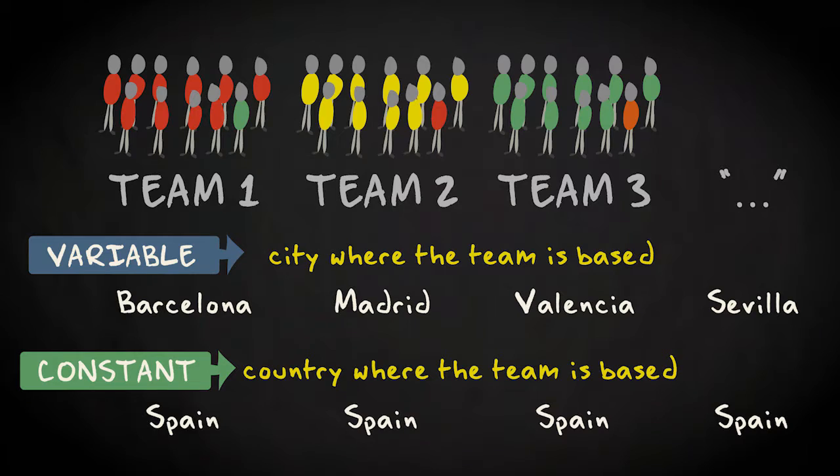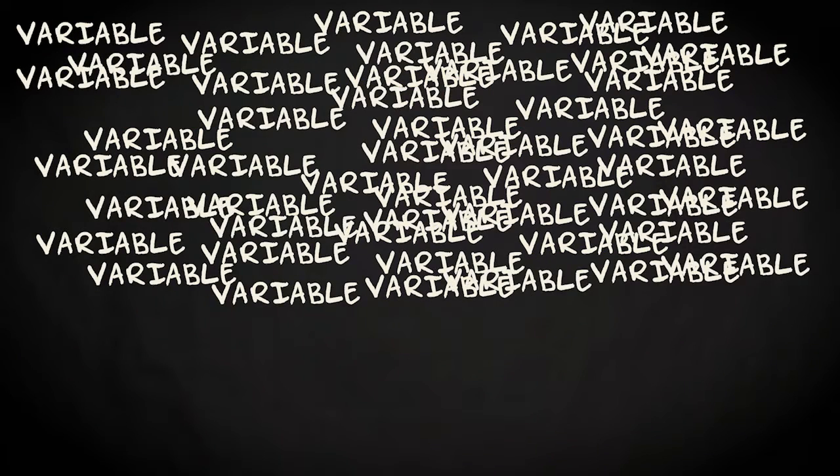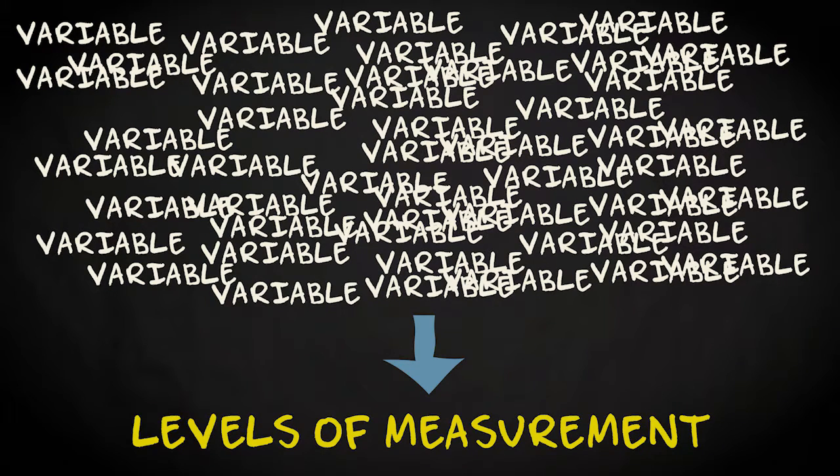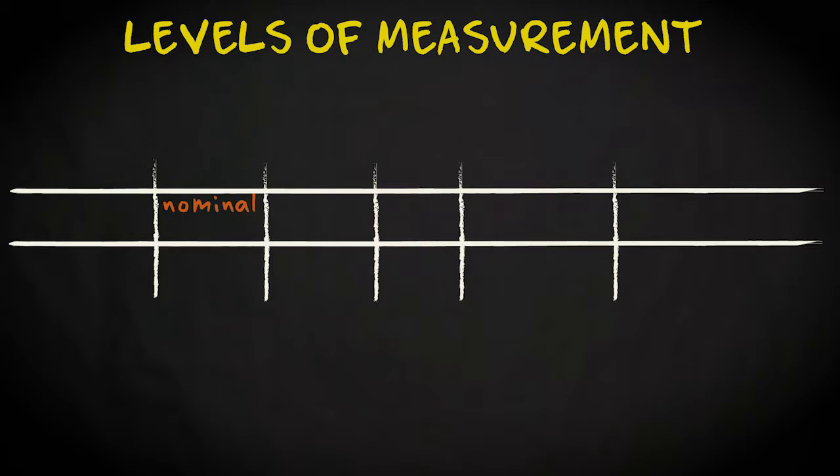You can probably imagine that we can have many different kinds of variables, representing strongly diverging characteristics. For this reason, and also for other reasons that I will discuss later, it is of essential importance to distinguish different levels of measurement. The most simple level of measurement is the nominal level. A nominal variable is made up of various categories that differ from each other. There is no order, however. This means that it's not possible to argue that one category is better, or worse, or more, or less than another. An example is the nationality of the football players. The various categories, for instance, Spanish, French, or Mexican, differ from each other, but there is no ranking order. Another example is the gender of the football players, or the city the football teams come from.